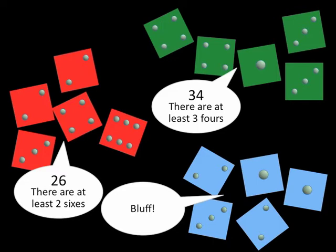So what happens? Well, the blue group called bluff. And there are at least three 4s out there. So the blue group has to lose a dice. There we go.